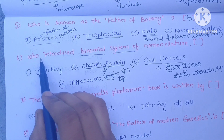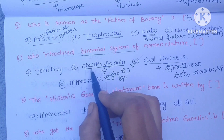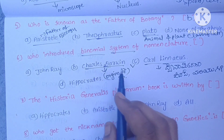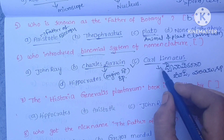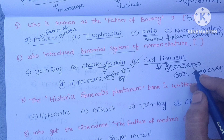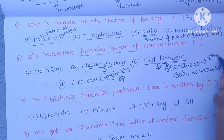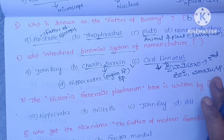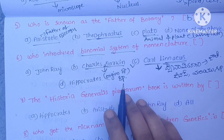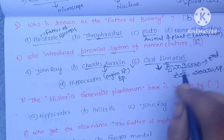The sixth question is: who introduced the binomial system of nomenclature? Options: A. John Ray, B. Charles Darwin, C. Carl Linnaeus, D. Hippocrates. Carl Linnaeus introduced the binomial system, and Charles Darwin wrote about the origin of species. The correct answer is C. Carl Linnaeus.